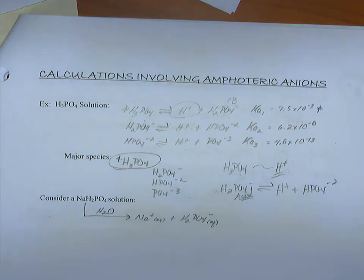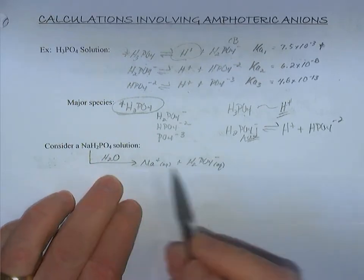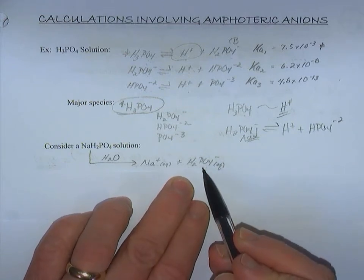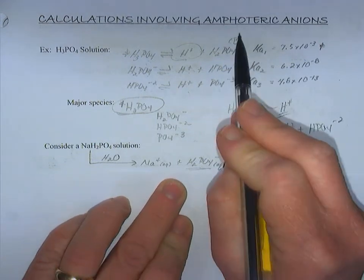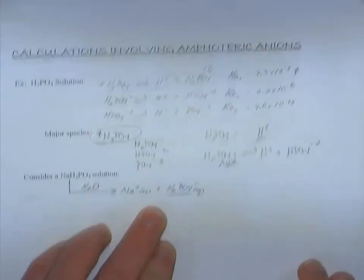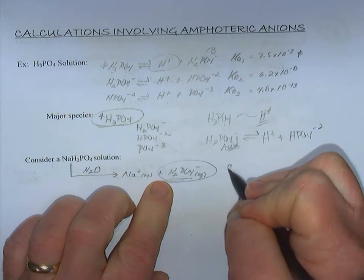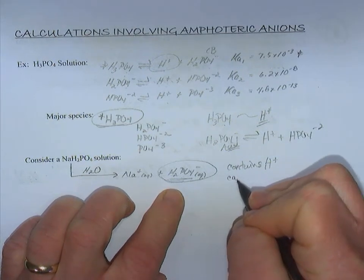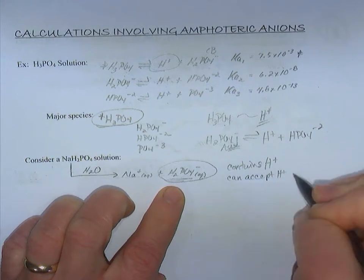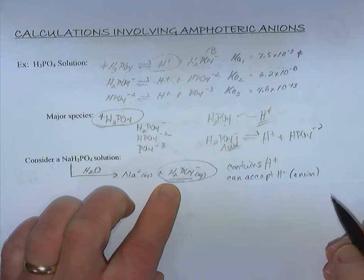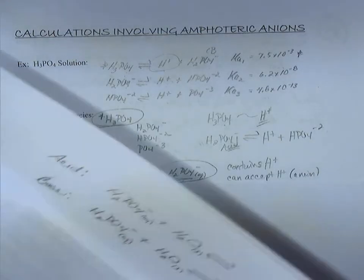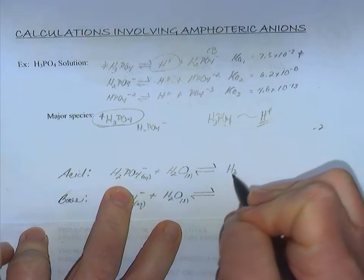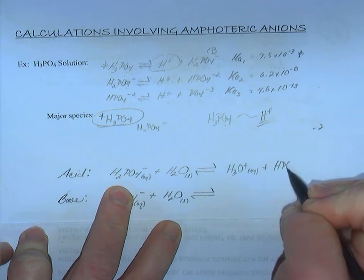But what about the case where H2PO4⁻ is alone in solution, with nothing to dictate whether it behaves as an acid or a base? As soon as we have an amphoteric anion, we need to ask: how do we know it's amphoteric? Well, our anion contains the hydrogen ion, so it can release it, and because it is an anion we know electrostatic attraction will occur, meaning it can also accept a hydrogen ion. H2PO4⁻ can behave as an acid, creating hydronium and HPO4²⁻.